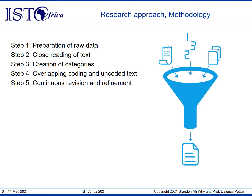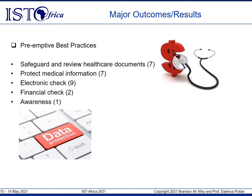Additionally, pre-emptive (before) and retroactive (after) best practices were distinguished from each other. Pre-emptive best practices are measures that can be taken prior to an incident to minimise individuals' chance of becoming victims of medical identity theft. A total of 26 pre-emptive best practices were identified in five categories: safeguard and review healthcare documents, protect medical information, electronic check, financial check, and awareness.